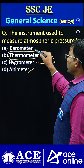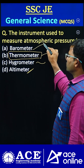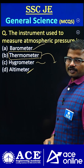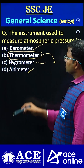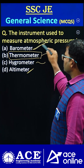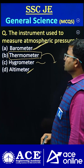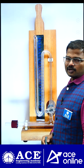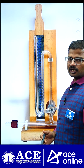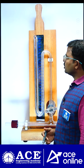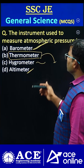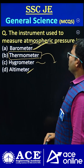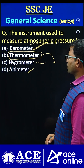Next, the last one — barometer. This one is used to measure the atmospheric pressure. So that's why the correct answer is option A only. Generally we use the aneroid barometer and Fortin barometer. These two types are majorly used to study the variations of atmospheric pressure.